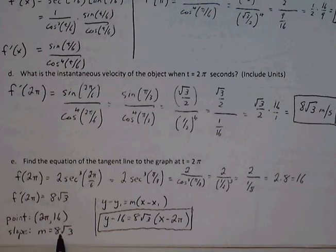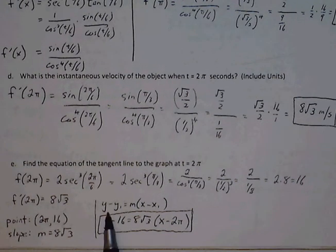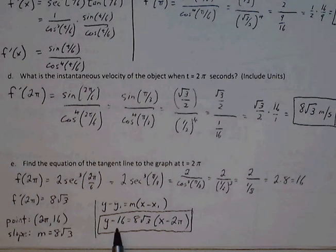My slope is 8 root 3. So I have my point, I have my slope. Plug into my point slope. Y minus 16 equals 8 root 3 times x minus 2 pi.